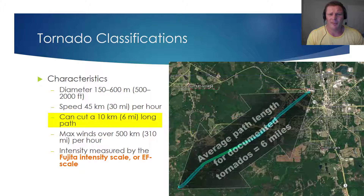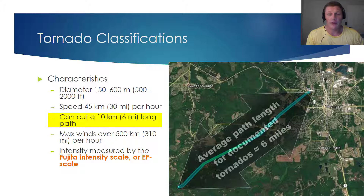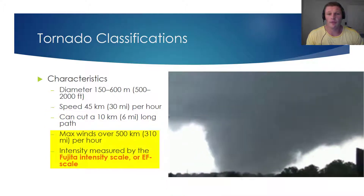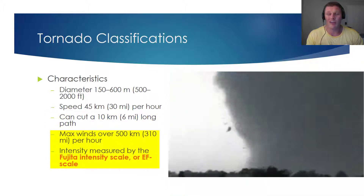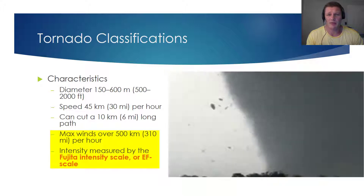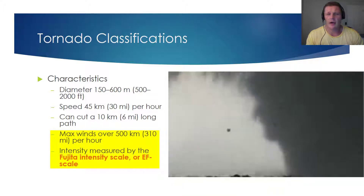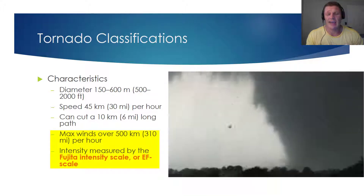Typically, tornadoes will cut a path of about six miles or so, although this number only applies to documented tornadoes. The real average path for tornadoes is unknown, but it's probably less than six miles on average. The maximum wind speeds for the strongest tornadoes can be over 310 miles per hour. As a way to measure tornado intensity, we often cite the EF scale.